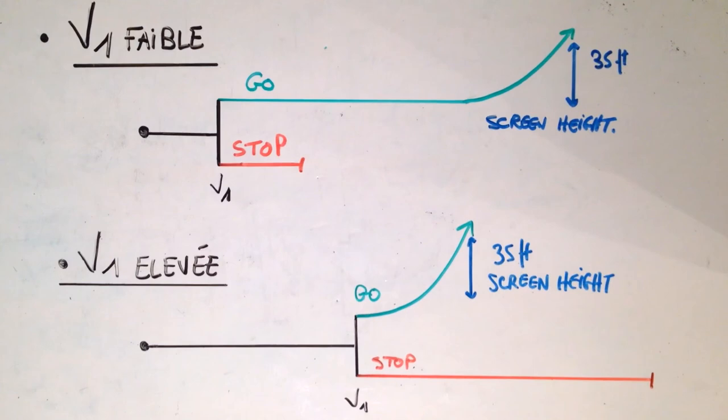So if we are limited in terms of the takeoff distance, in these cases, we will prefer a V1 high, and as we just saw, a V1 high reduces our takeoff distance. So it depends on the factor that will limit us the most. Either we are more limited by the stopping distance, or we are limited by the takeoff distance.